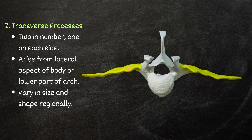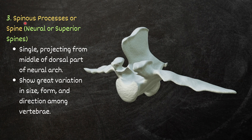Transverse processes are two in number, one on each side, arising from the lateral aspect of the body or lower part of the arch. They vary in size and shape regionally. The spinous process or spine is a single projection from the middle of the dorsal part of the neural arch, with great variation in size, form, and direction among vertebrae.